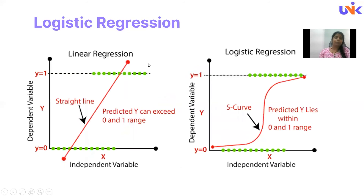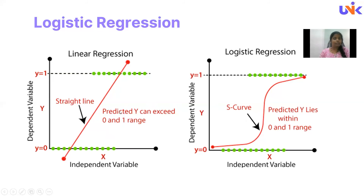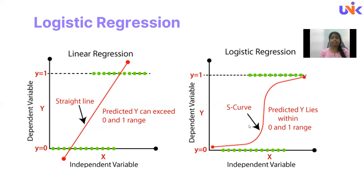Then comes another very interesting type: logistic regression. This is specifically binary logistic regression. In this plot, I have tried to compare linear with logistic regression. In linear regression, we use the equation of a line. In logistic regression, your dependent variable is categorical in nature, always having only two possible categories. Let me show you some data as an example.